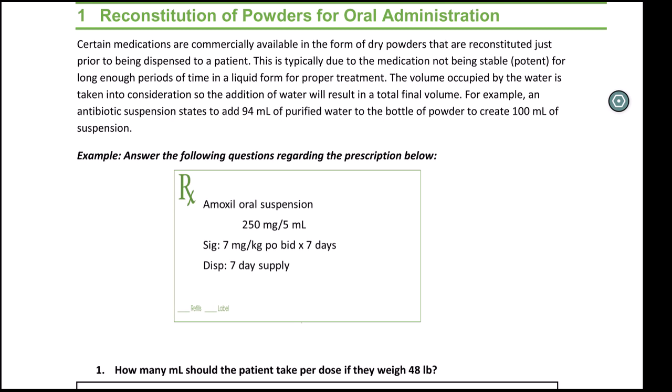That's what the prescriber here is looking for us to do, is to dispense the 250 per 5 mL concentration. And the SIG is actually given to us in milligrams per kilogram. So it's 7 mg per kilogram, twice a day for 7 days. And it says to dispense a 7-day supply.